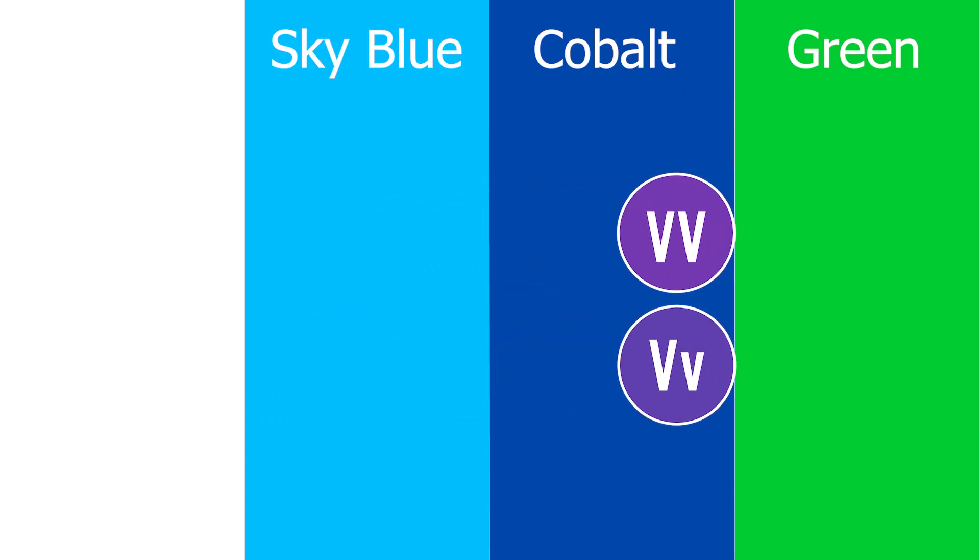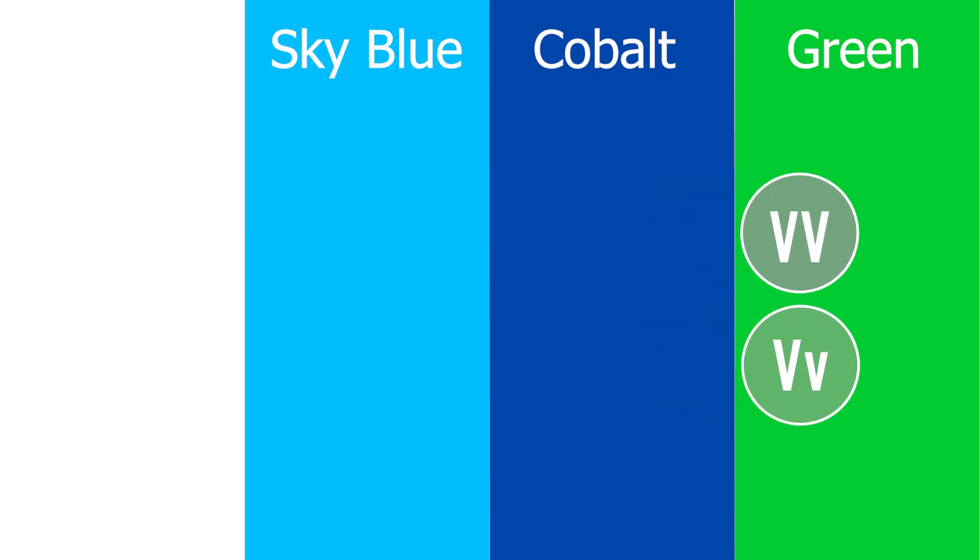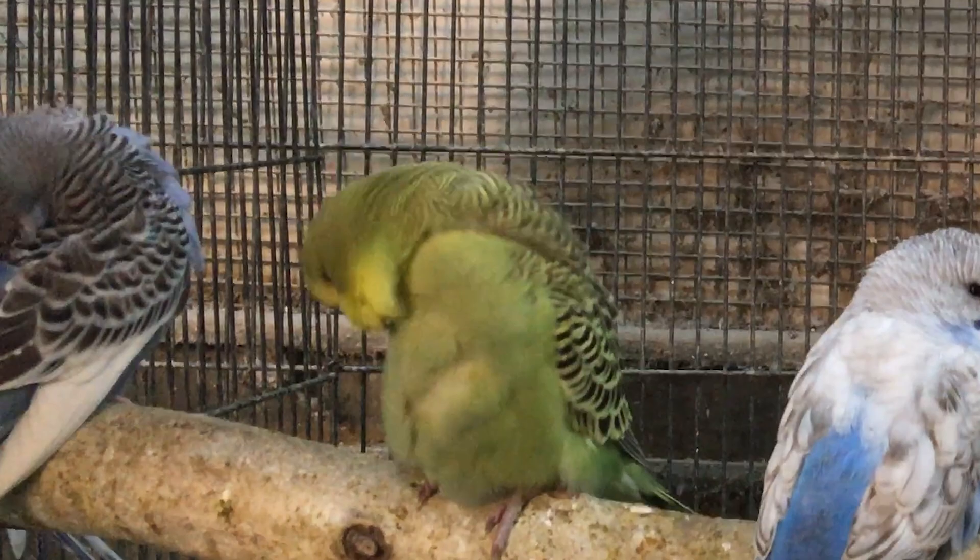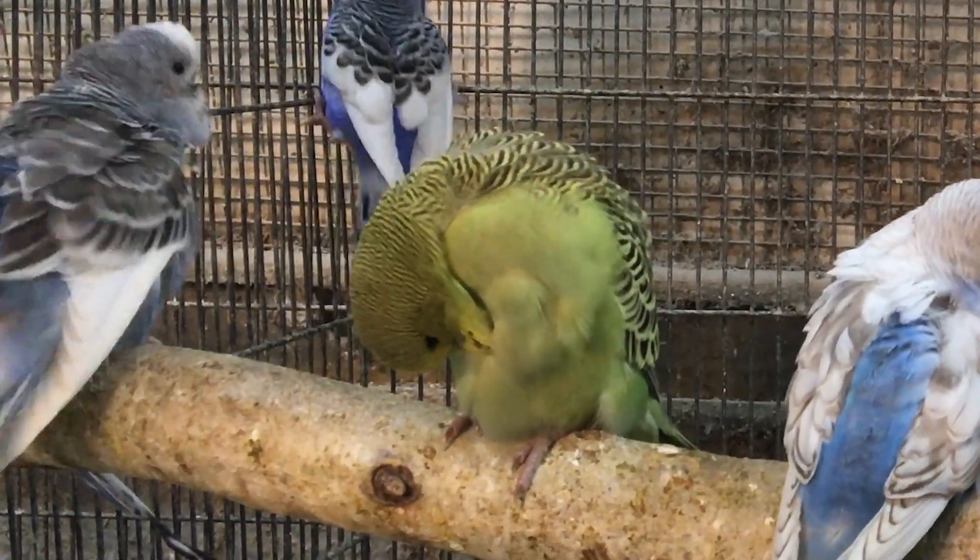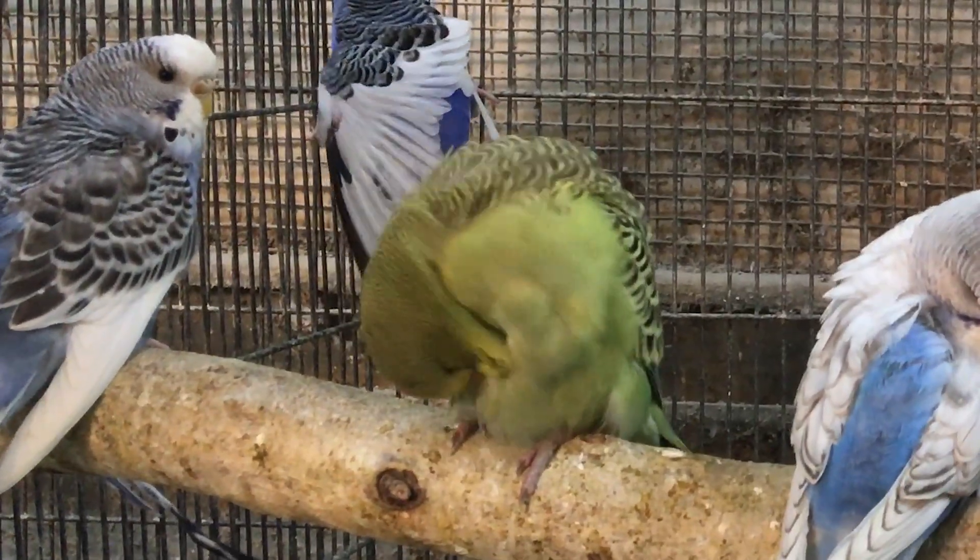Actually, when I hover over the green, you can see how it turns into olive green. This is why it's very hard to tell if a green budgie has violet, unless you know its genetics. You could easily confuse violet green with normal olive budgie.